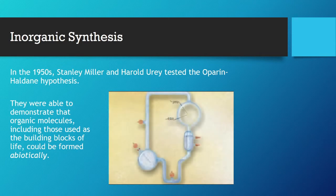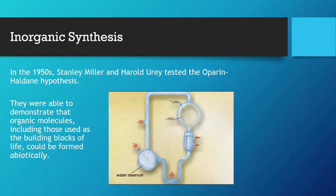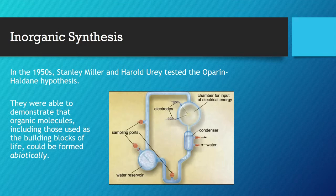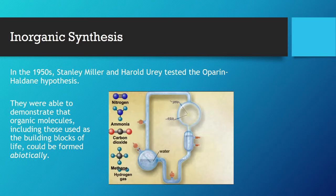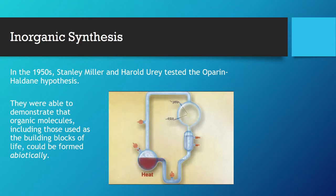In 1953, Stanley Miller and Harold Urey tested this hypothesis. They constructed a closed system with a reservoir for water, sampling ports, a chamber for the input of electrical energy, and a condenser to convert the water vapor back to a liquid. The researchers then added water, hydrogen gas, methane, carbon dioxide, ammonia, and nitrogen. The water was heated to form a vapor, and electrical sparks were generated to mimic lightning. This apparatus simulated the possible conditions of the early Earth.